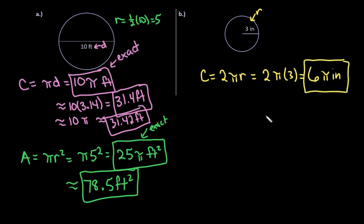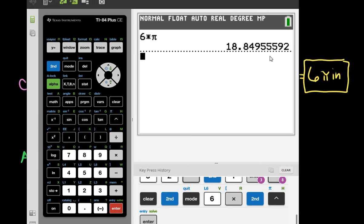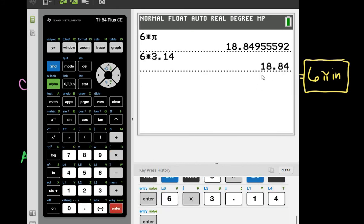And again, you can either plug into your calculator 6 times pi or 6 times 3.14. I normally, see, I just grabbed a different calculator. So if you have a TI-84, you would just do 6 times 2nd pi. It doesn't matter what calculator you use, pi is always in there. So for this, it would be 18.85 if you use the pi button, where if I do 6 times 3.14, I would get 18.84.